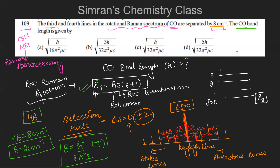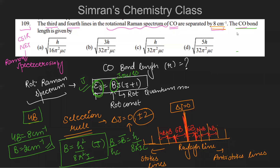Since B is given in cm⁻¹, we use the formula B = h/(8π²Ic), where c is the speed of light. This gives B in cm⁻¹. We set this equal to 2 cm⁻¹ as derived from the given separation.